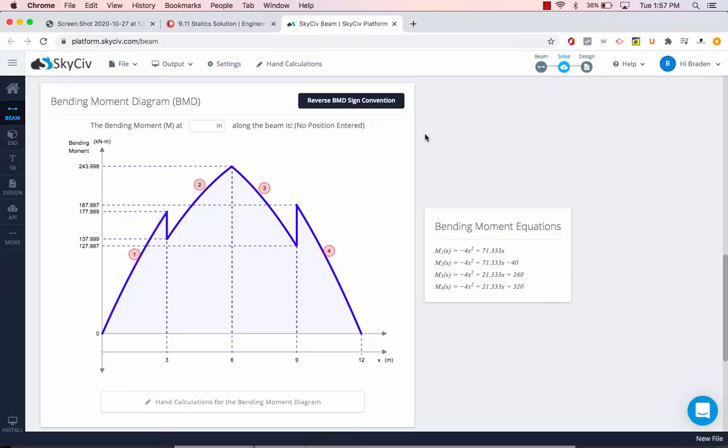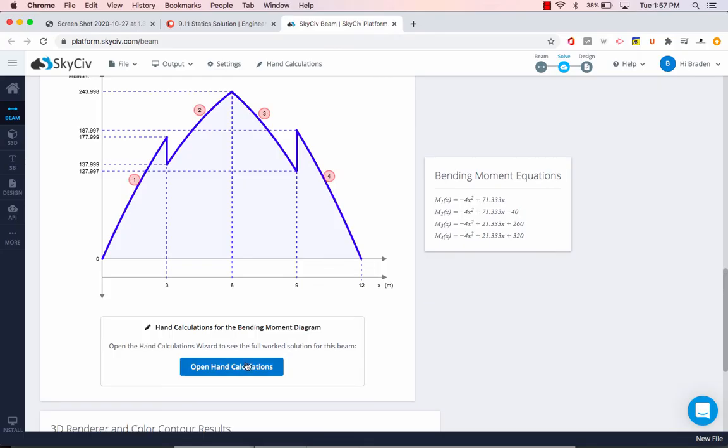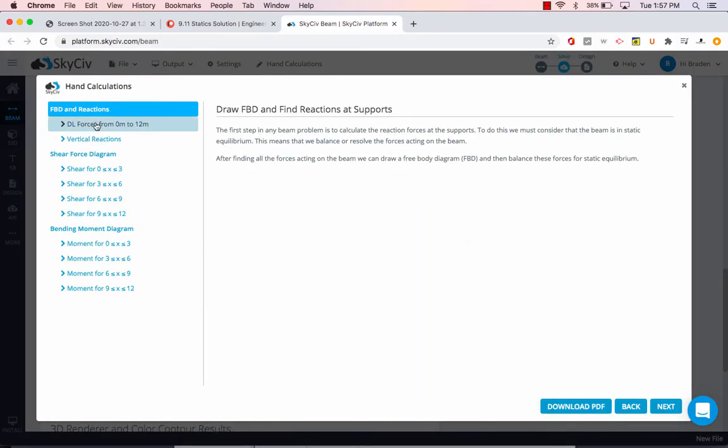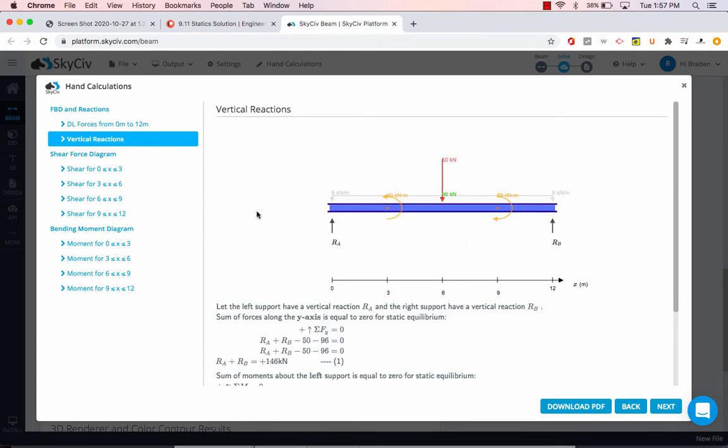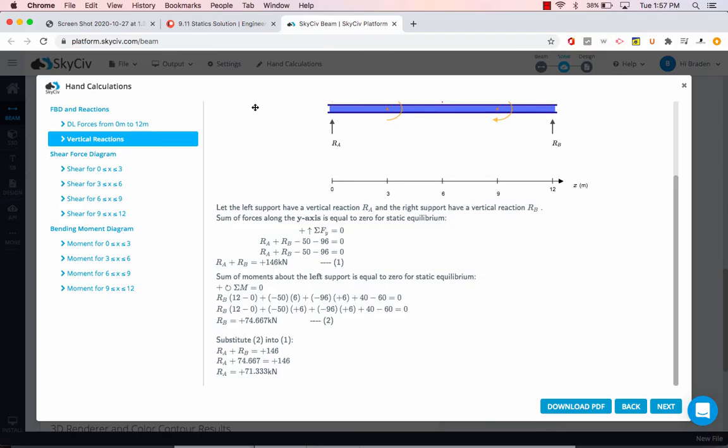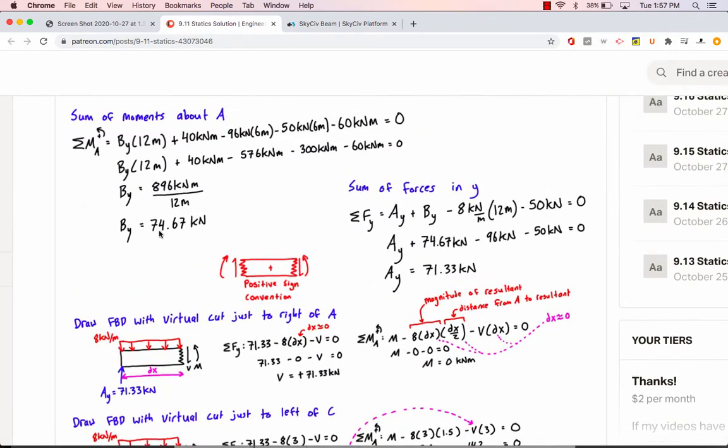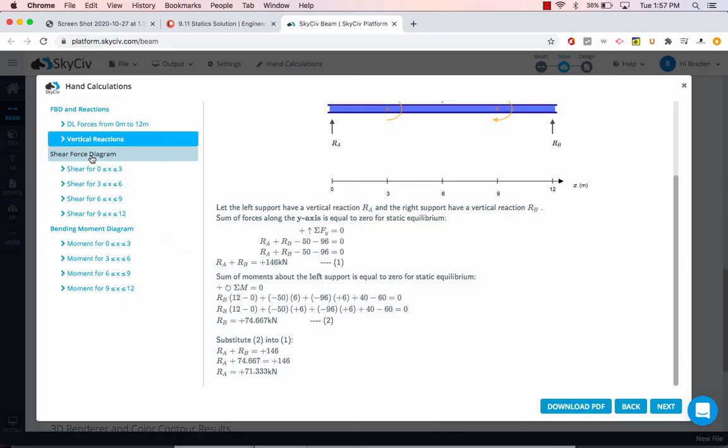It gives us the hand calculations for the bending moment diagram and the shear force. You can open it up and you can see here, if we start at the top, it just has some notes here on finding the reactions and it gives us all of the work to find the reactions. It's pretty nice. You can see it's exactly the same stuff that we were doing when we're doing it by hand. It's all up here. We calculated the reactions to be 74.67 and 71.33.